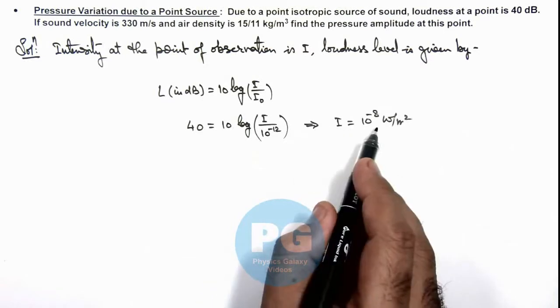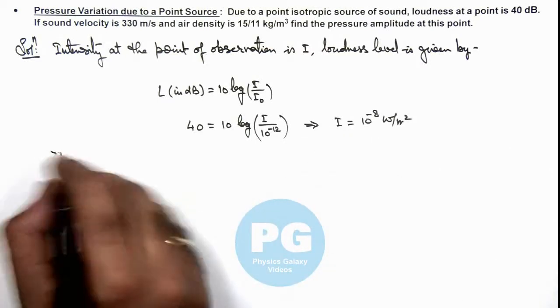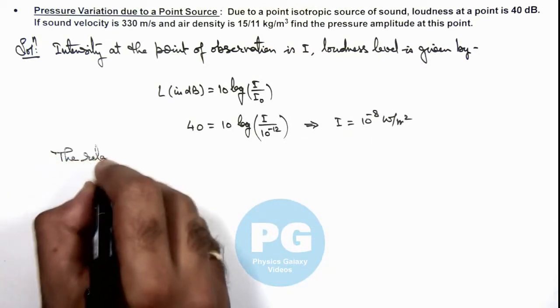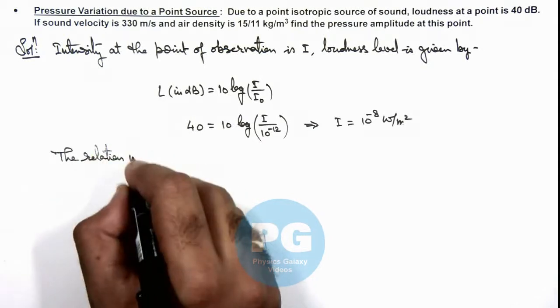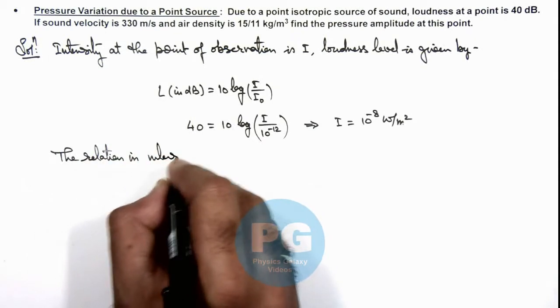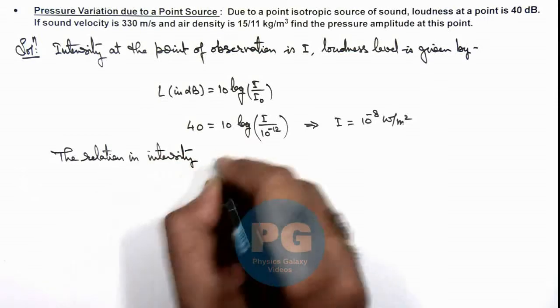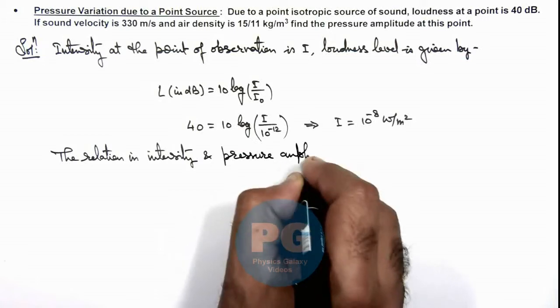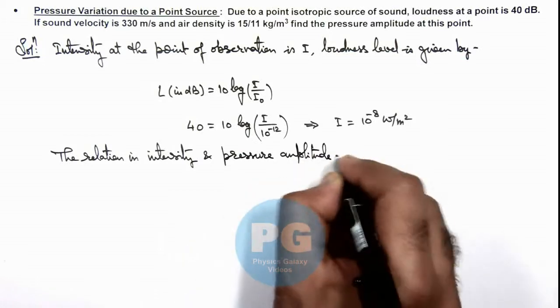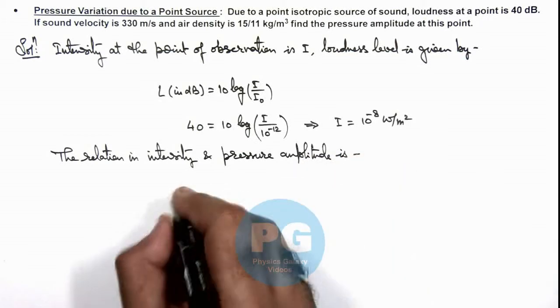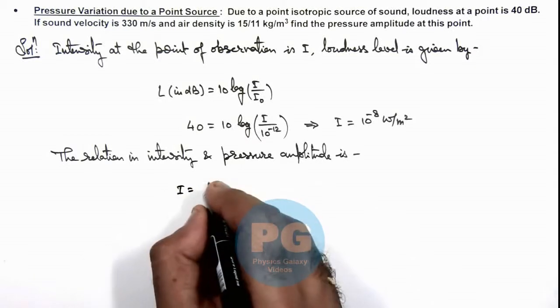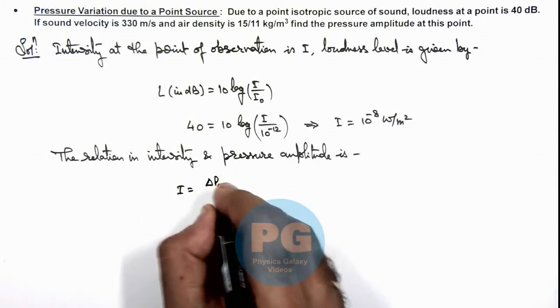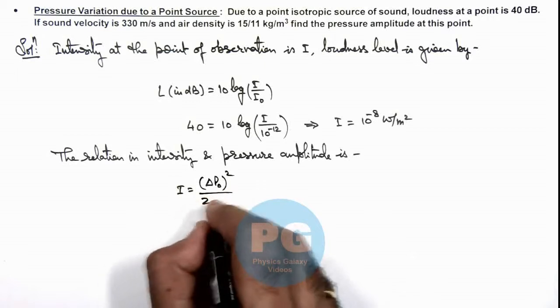As we have got the value of intensity, we know the relation between intensity and pressure amplitude. This relation we already studied in concept videos as delta P₀ whole square by twice of ρv.